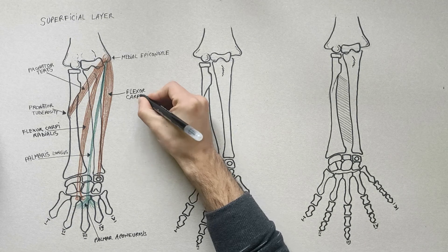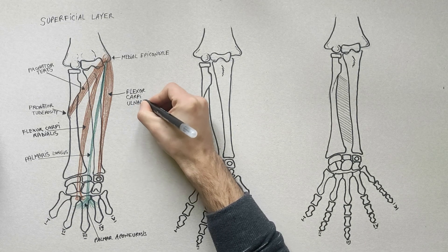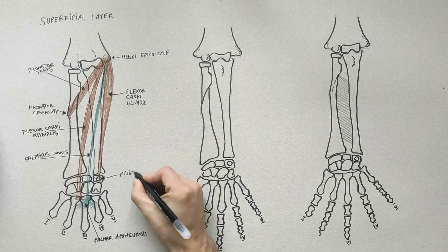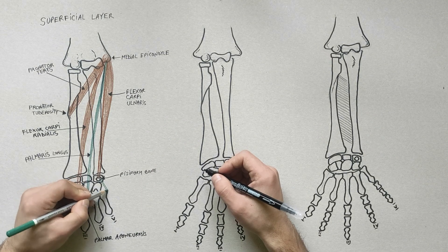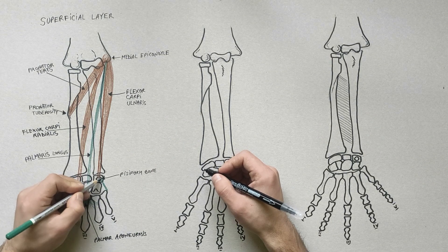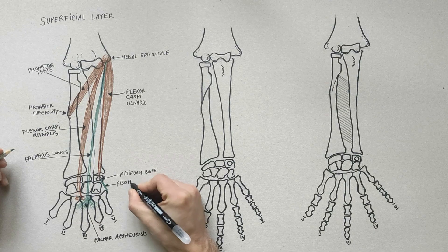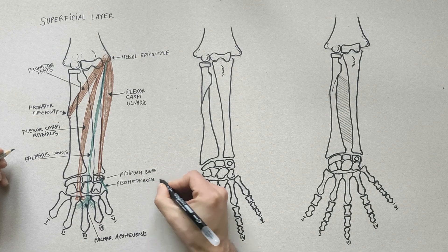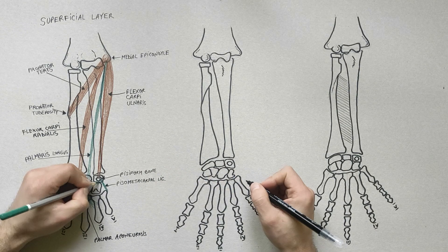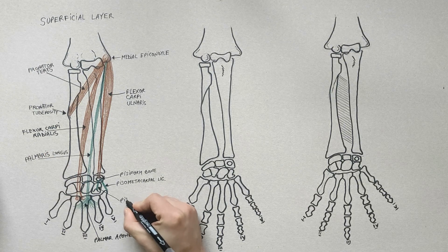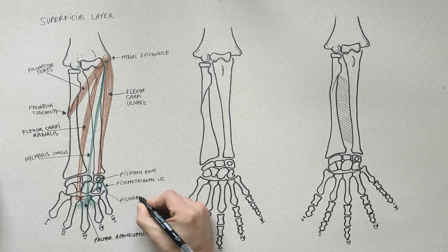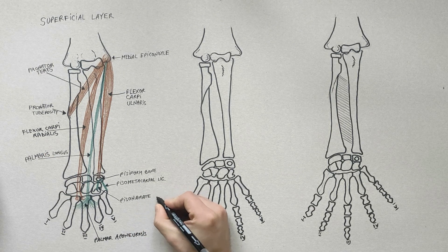Its tendon inserts directly into the pisiform bone, and indirectly into the base of the fifth metacarpal bone by way of the pisometacarpal ligament, and into the hook of the hamate by way of the pisohamate ligament.